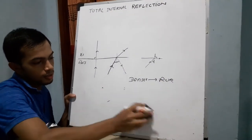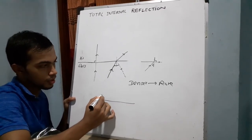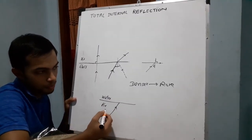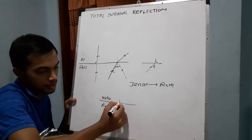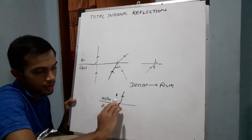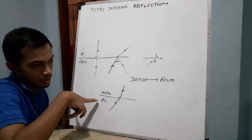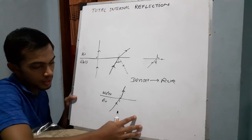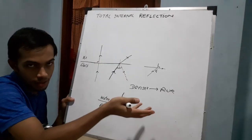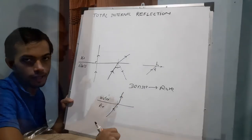Total internal reflection occurs only if the light ray moves from the denser medium to the rarer medium. If the incident ray comes from air into water, the refracted ray will move towards the normal — it won't refract away from the normal. That is why you cannot get total internal reflection when a light ray moves from rarer to denser medium. To get total internal reflection and the critical angle, the light ray should always be moving from denser medium to rarer medium.